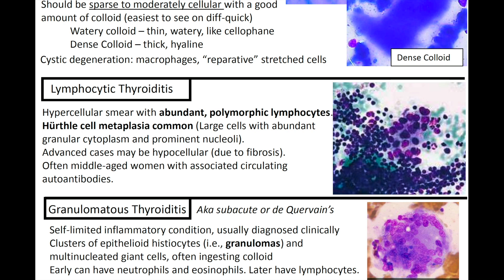Next up, we've got lymphocytic thyroiditis. You're going to see a hypercellular smear with abundant polymorphic lymphocytes, as we're seeing here. Hürthle cell metaplasia is common — these are large cells with abundant granular cytoplasm and prominent nucleoli. In advanced cases, it may be hypocellular due to fibrosis. Lymphocytic thyroiditis often occurs in middle-aged women with associated circulating autoantibodies.